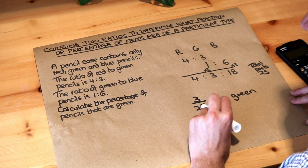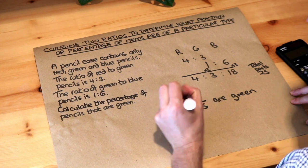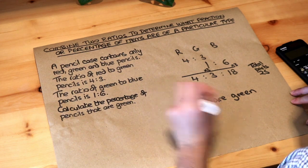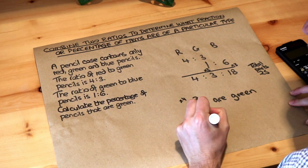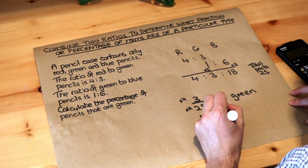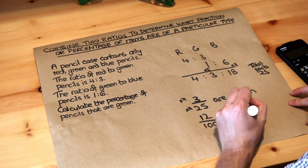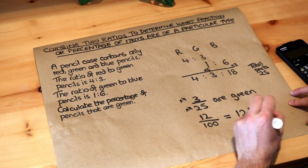So to get 25 to 100, we just need to times by four, so the three we also have to times by four, so that becomes 12 over 100 are green. And 12 over 100 is just 12 percent, and that is the final answer.